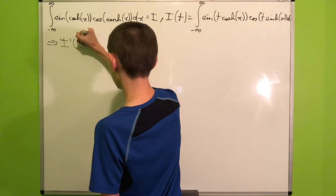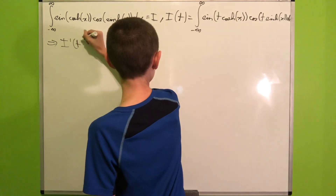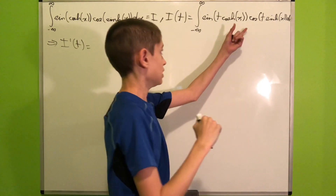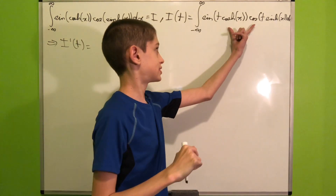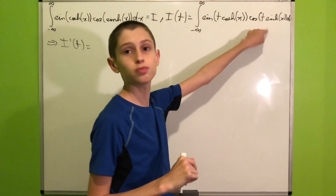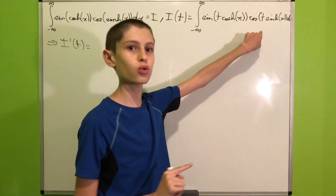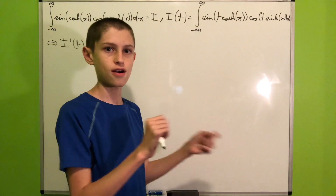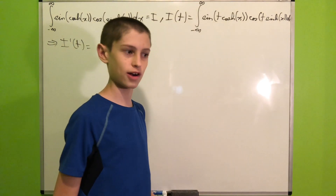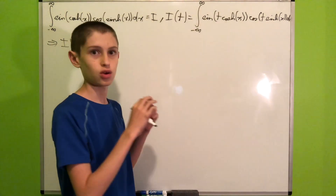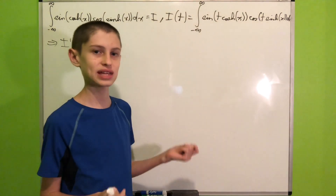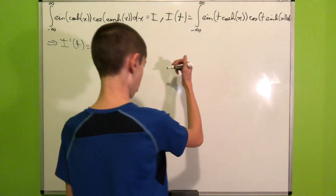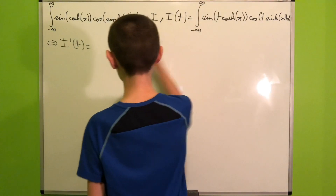So I'(t) will be computed using the product rule, since we have a product of two functions both depending on t. This gives us a sum of two terms, which means we can split into two separate integrals.